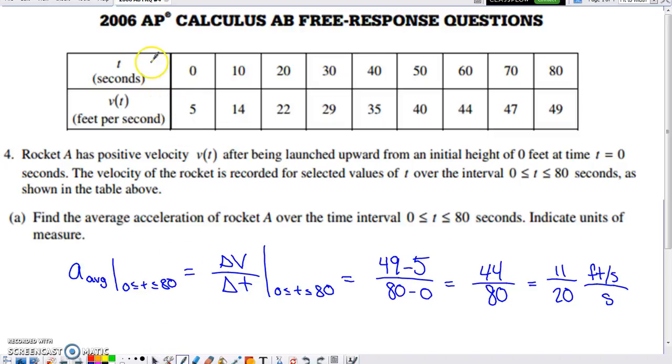Here's a problem from an old AP exam from 2006. It's a non-calculator question and deals with this table of values. If you analyze what you have access to in the table, it looks like we were measuring velocity every 10 seconds in time. It describes what the velocity is for in the problem statement. We've got a rocket with positive velocity after being launched upward from an initial height of 0 feet at time 0 seconds. The velocity of the rocket is recorded for selected values of t from 0 to 80 as shown above.